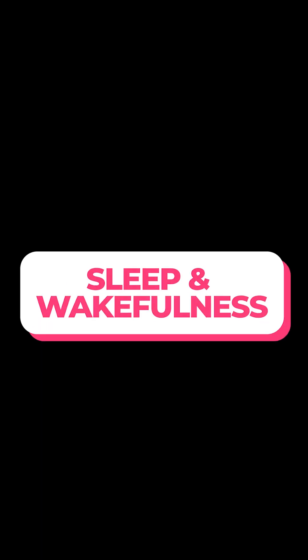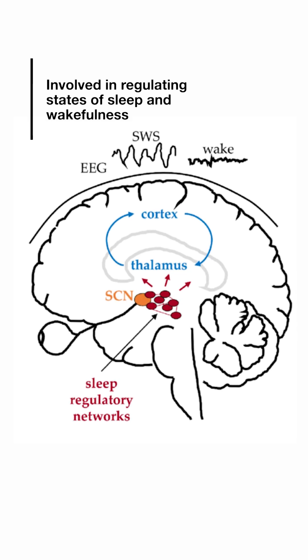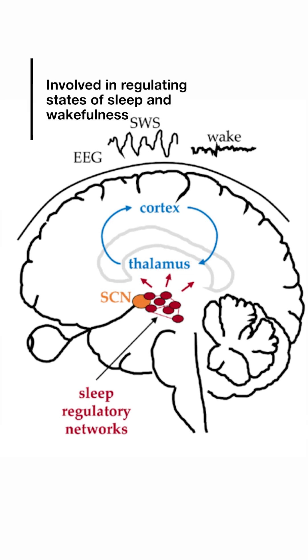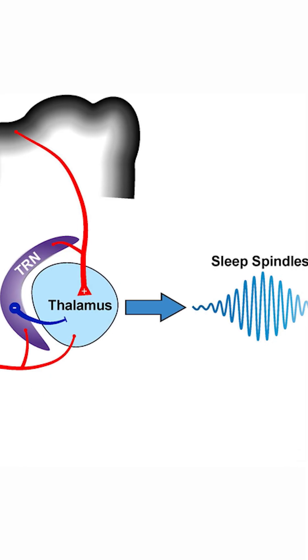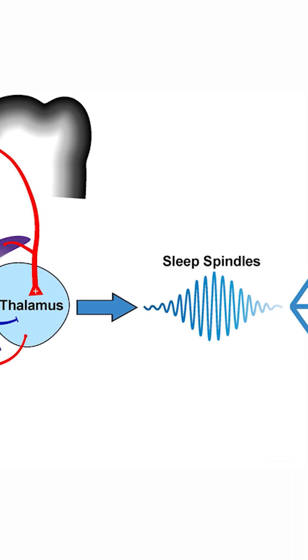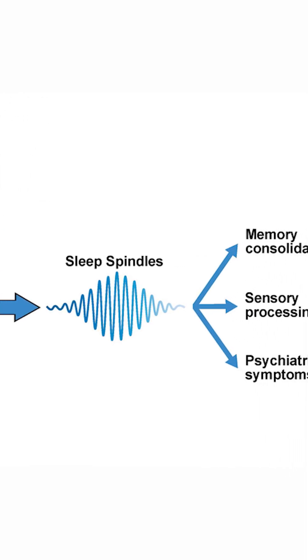The thalamus is also involved in sleep and wakefulness, regulating states of sleep and wakefulness and playing a role in controlling sleep spindle activity during the sleep cycle.